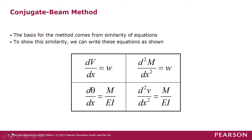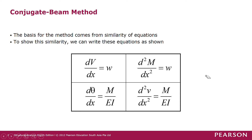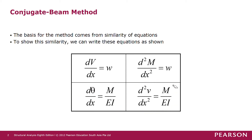First of all we look at the background. The basis for the method comes from similarity of equations of shear force and bending moment, and also slope and deflection. To show this similarity we can write these equations as shown. For shear we have dV/dx equals the external load w, and for moment we have d²M/dx² equals the external load. For slope we have dθ/dx equals M over EI, and for displacement we have d²v/dx² equals M over EI. You can see some similarity here — dV and dθ, and also d²M and d²v — and w corresponds to M over EI.